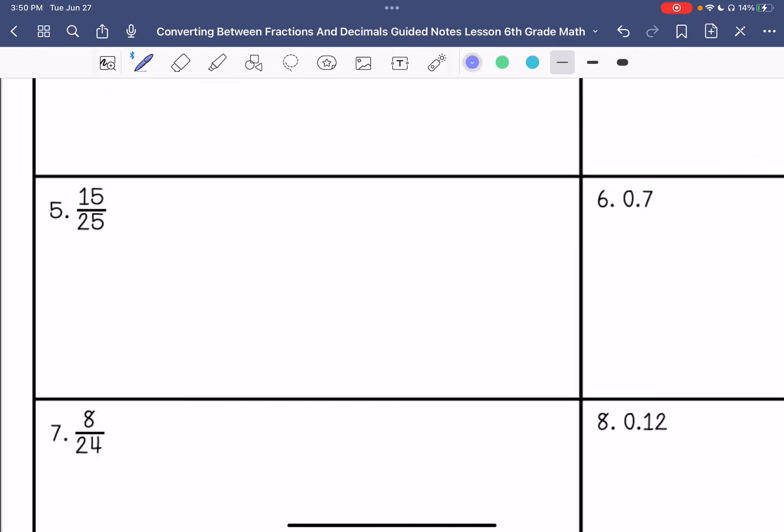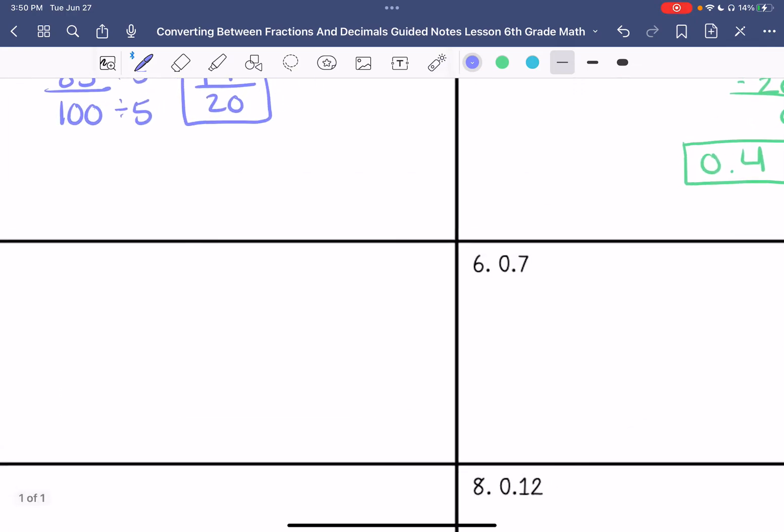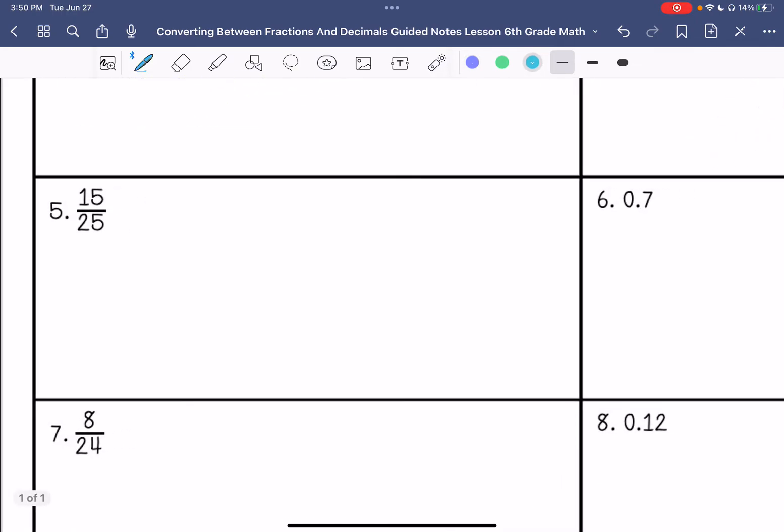Number 5. Simplify by 5. We get three fifths. 3 divided by 5. This is 0.6 tenths.